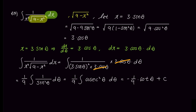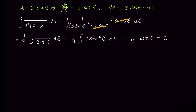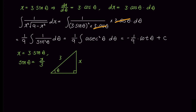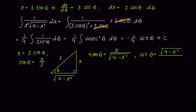Is the calculation complete? Not yet. Our problem was originally expressed in terms of x, and we only temporarily substituted theta for x, so we need to rewrite the answer in terms of x again. Since we substituted x with 3 sine theta, sine theta becomes x over 3. Drawing a right triangle: the opposite side becomes x and the hypotenuse is 3. Using the Pythagorean theorem, the adjacent side becomes the square root of 9 minus x squared. Therefore, cotangent theta becomes square root of 9 minus x squared over x, and the final answer is negative 1 over 9 times square root of 9 minus x squared over x plus C.